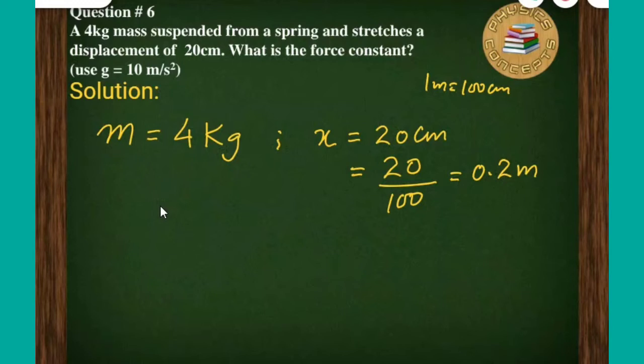We need to find the value of force constant, that is k, and the value of g is given to us, that is 10 m per second square.